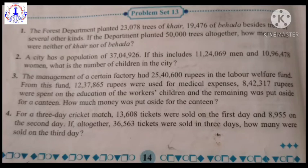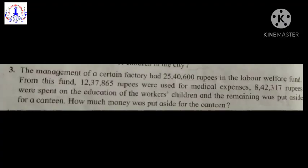Sum number 2 I will be giving you for homework. Now let's start with sum number 3. The management of a certain factory had 25,40,600 rupees in the labour welfare fund. From this fund, 12,37,865 rupees were used for medical expenses and 8,42,317 rupees was spent on the education of the workers' children, and the remaining was put aside for a canteen. How much money was put aside for the canteen?